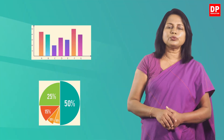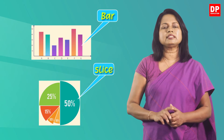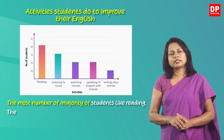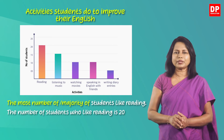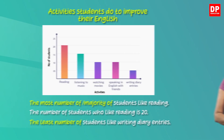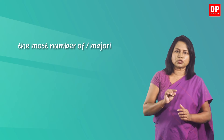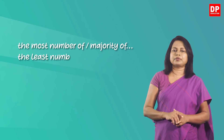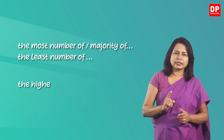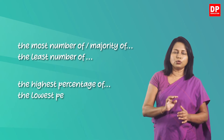Now let's see how you can write about each bar or slice in a chart. 'The most number of' or 'majority of the students like reading. The number of students who like reading is 20. The least number of students like writing diary entries.' Here you have to remember these two phrases: 'the most number of' or 'majority of', and 'the least number of'. In some situations you will have to write 'the highest percentage of' or 'the lowest percentage of'.